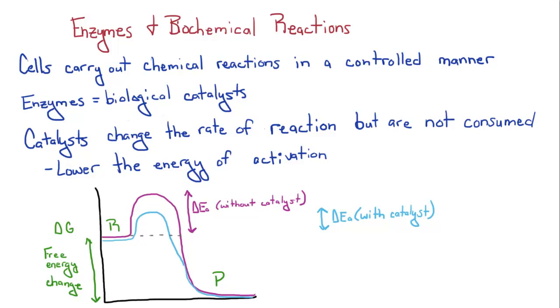Living things have these things called enzymes. Enzymes are biological catalysts. A catalyst is a molecule that can change the rate of reaction but is not consumed in the process. Catalysts do this by lowering what is called the energy of activation.